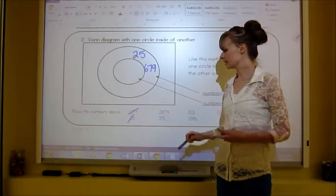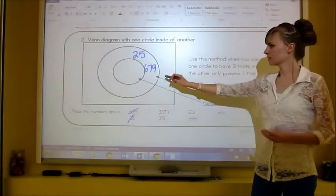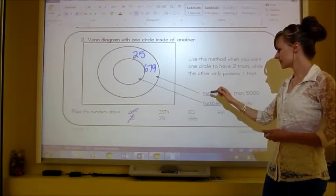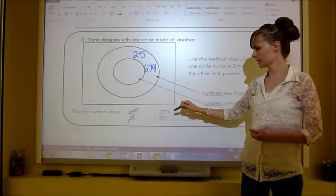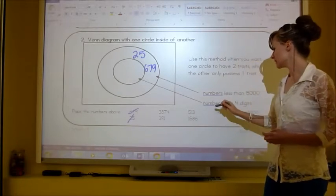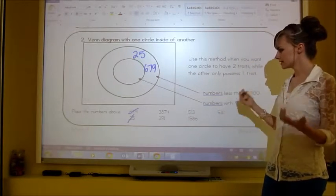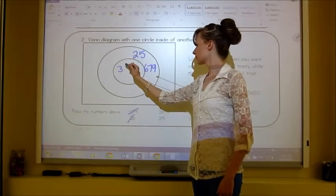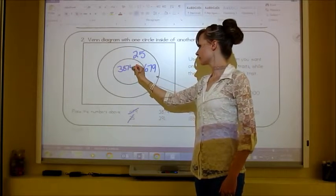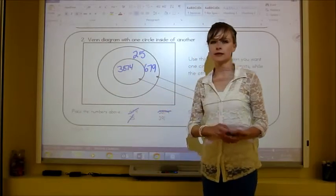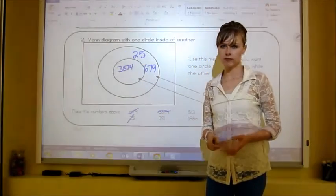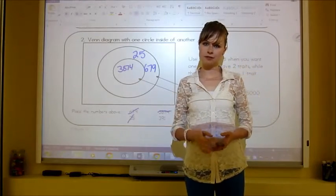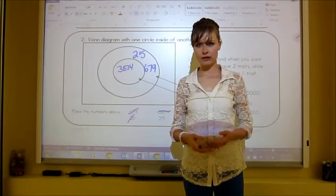Next, 3,874: is it less than 5,000? Yes. Does it have four digits? Yes — so we write it in the center: 3, 8, 7, 4. Pause the video, see if you can finish sorting the rest, then play again to check your answers.